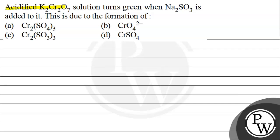Hello, so let's read this question. Acidified K2Cr2O7 solution turns green when Na2SO3 is added to it.